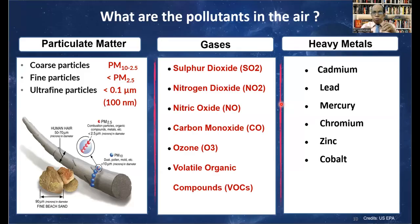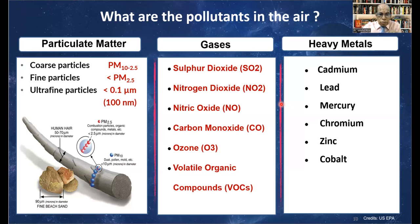So what are the various pollutants which are rampant in the air? There are three types of pollutants. Particulate matter: coarse particles, PM10 to 2.5; fine particles, less than PM2.5; and ultra-fine, less than 0.1 micrometers.